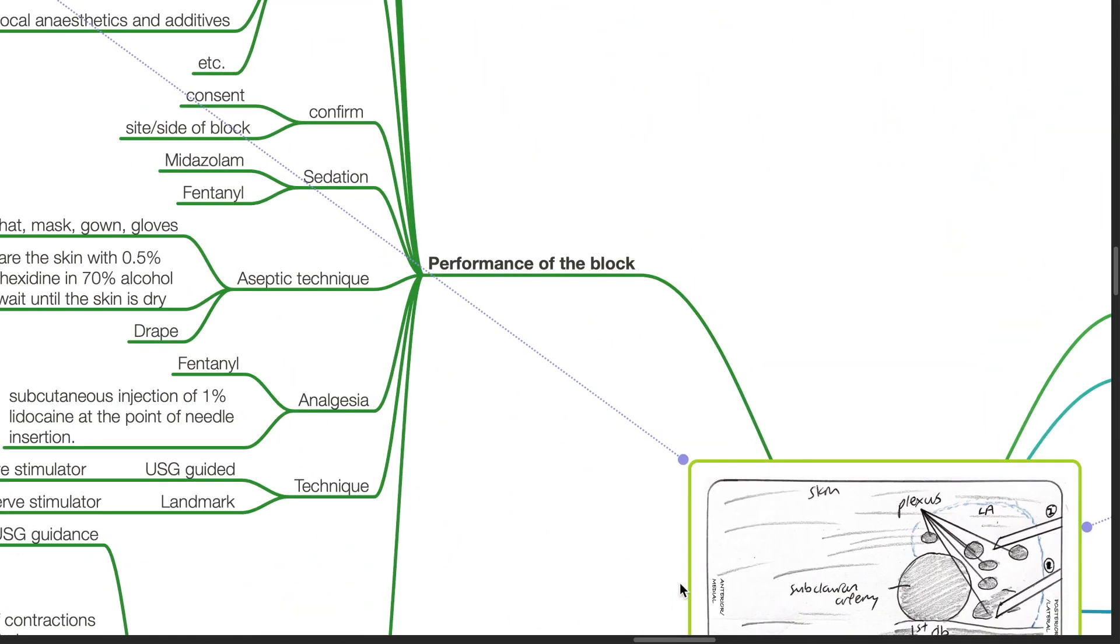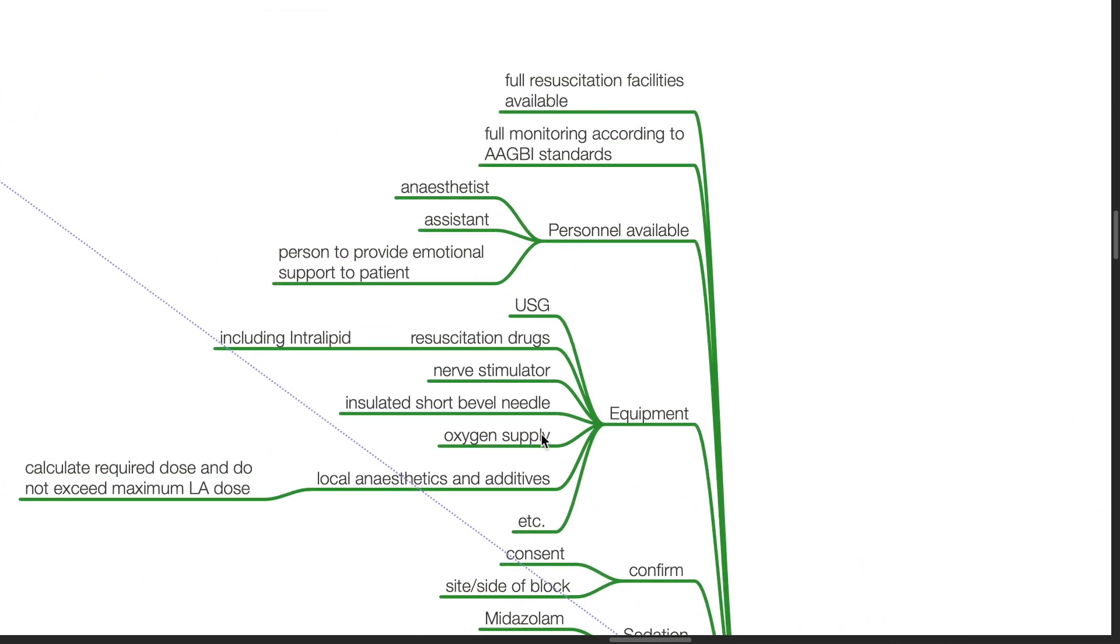Performance of the block. Full resuscitation facilities must be available and full monitoring according to AAGBI standards. Available personnel should include anesthetist, assistant, and a person to provide emotional support to the patient.